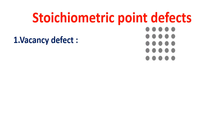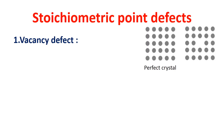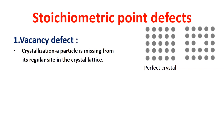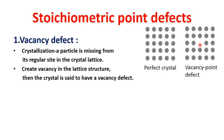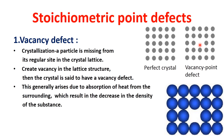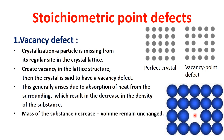Now we will talk about vacancy defect. During crystallization of a solid, a particle is missing from its regular site in the crystal lattice. The missing particle creates a vacancy in the lattice structure, and the crystal is said to have a vacancy defect. This generally arises due to absorption of heat from the surroundings, resulting in a decrease in the density of the substance, since mass decreases while volume remains unchanged.